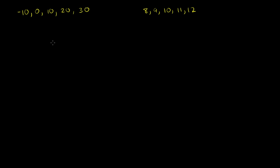Now, let's calculate the arithmetic mean for both of these data sets. And when you go further on in statistics, you're going to understand the difference between a population and a sample. We're assuming that this is the entire population of our data, so we're going to be dealing with the population mean and population measures of dispersion. In the future, you're not going to have all of the data — you're just going to have some samples of it and try to estimate things for the entire population. I just want to make that clarification.